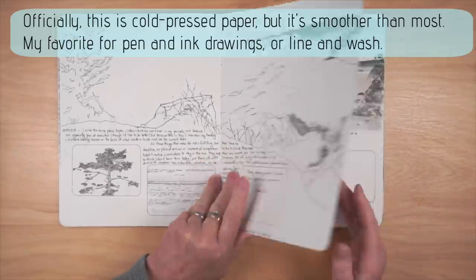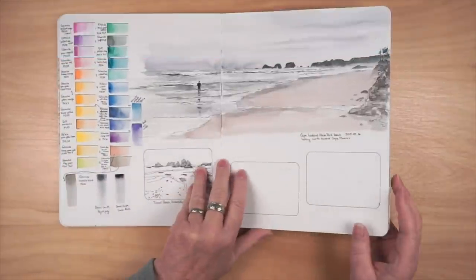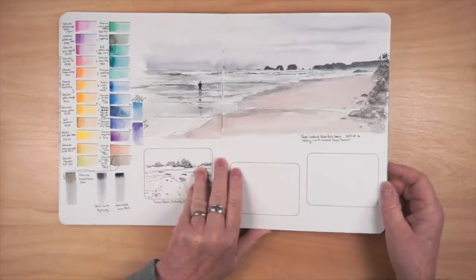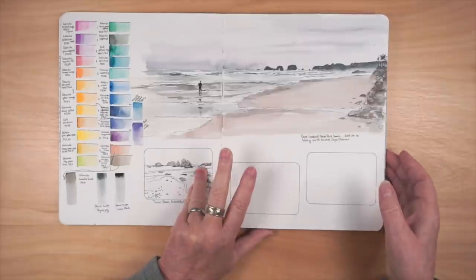Like the previous one, the paper in this sketchbook is a little more like a student-grade paper, so washes tend to be a bit on the streaky side. But I don't mind that. Here's an example of what you can do if they don't come with an envelope taped in the back. I just created one, just glued in my own envelope.